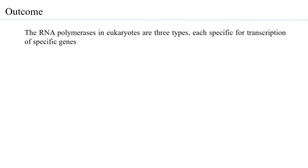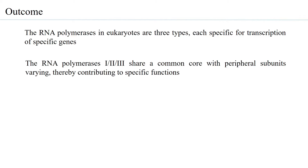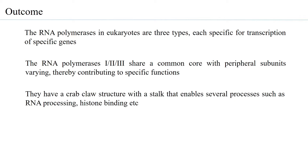The RNA polymerases in eukaryotes are basically three types, and each type is specific for transcription of certain specific genes. Divided into polymerase 1, 2, and 3, all of them share a common core with peripheral subunits that vary from one to the other, thereby contributing to specific functions attributed to each. They have the typical CRAB-claw structure, which is also observed in the RNA polymerase of the prokaryotes.